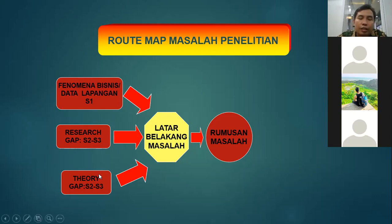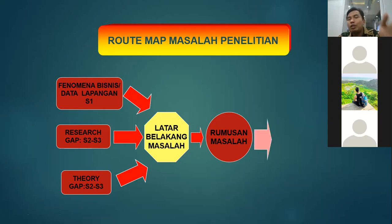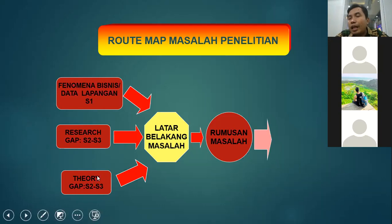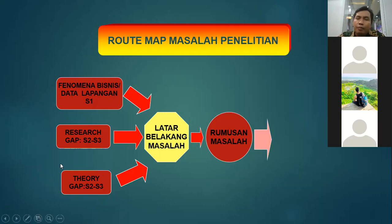Kemudian teori. Kalau teori-teori itu sebetulnya hampir sama dengan kesenjangan ini, tapi biasanya langsung menuju ke variabelnya. Itu akan menjadi sumber-sumber masalah, sumber latar belakang dari masalah. Dari latar belakang masalah itu nanti dirumuskan, membuat rumusan masalah. Ini yang sering salah: membuat rumusan masalah itu isinya judulnya. Padahal enggak. Padahal itu adalah topiknya, bukan judulnya. Bukan judul skripsi. Tapi harusnya topiknya.